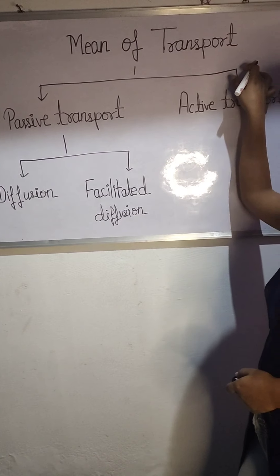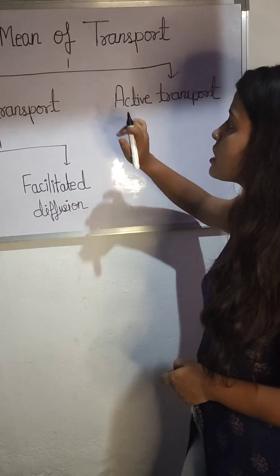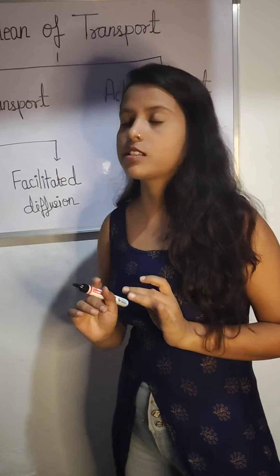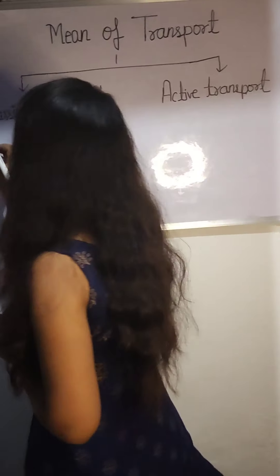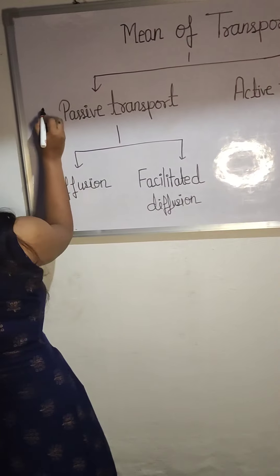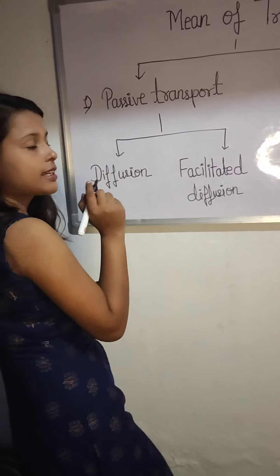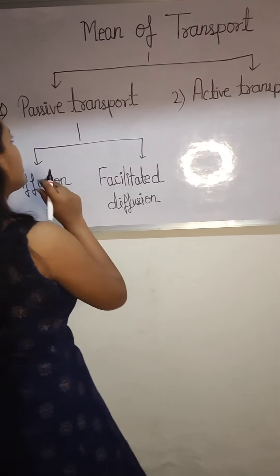How do you transport in plants? Transportation can be done in two ways. The first way is passive transport and the second way is active transport.